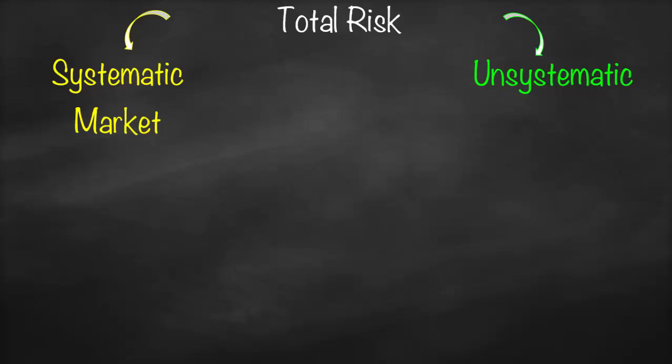Unsystematic risk affects a certain firm or a certain sector but does not affect all firms, and that's why we call it firm risk. For example, if the government decided to penalize polluting industries by imposing higher taxes, this would affect only polluting industries but not all companies.